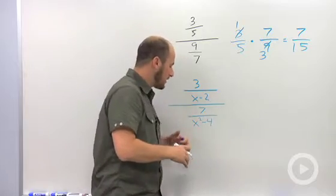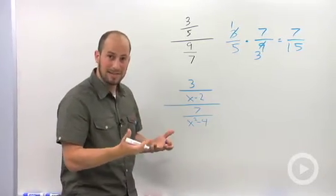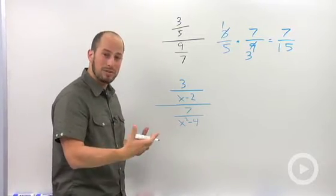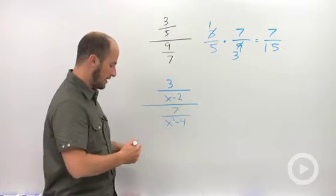This one we're dealing with rational expressions. We have fractions and x's and all that stuff in there. The same exact rule still holds. We have a fraction at the top, fraction at the bottom. Just flip and multiply.